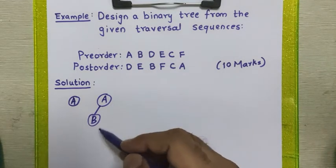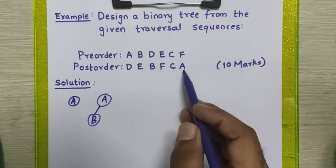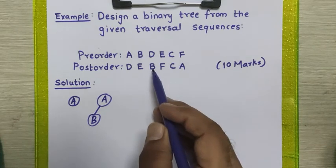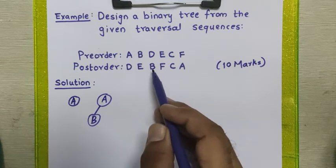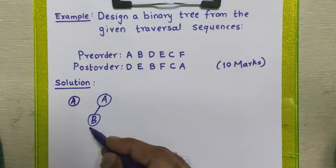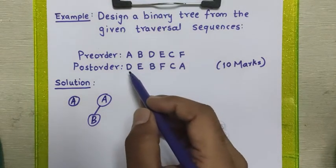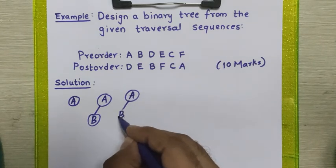After placing node B, we go back to the pre-order sequence and take the next element, node D. We check it in the post-order sequence. It appears before node A and also before node B, which means node D is part of node B and must be placed below node B. Since node B has no left or right child yet, node D is placed to the left side of node B.